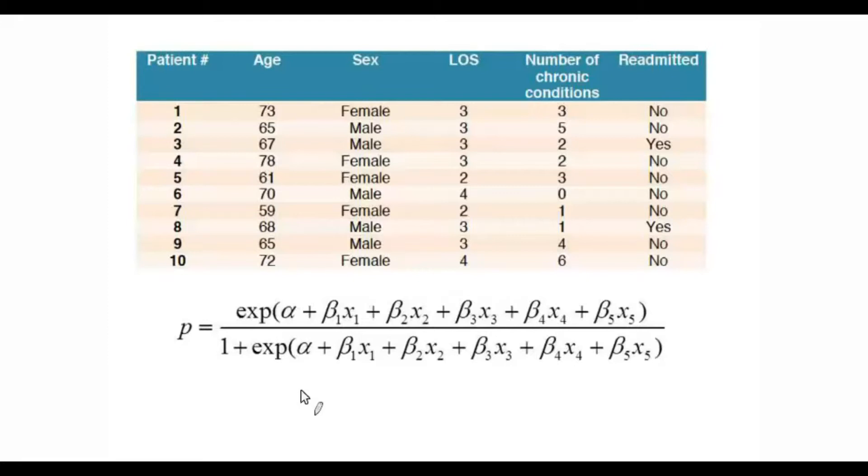Now, for this question, we're going to use the risk adjustment model that was used in question 5 of the study guide for total knee arthroplasty cases. We're going to assume that in some period of time, a hospital treats 10 patients with total knee arthroplasty.